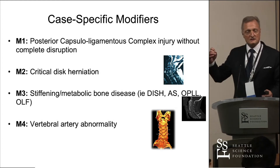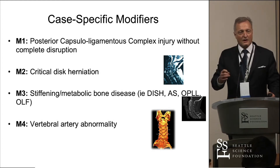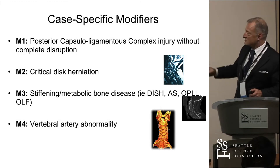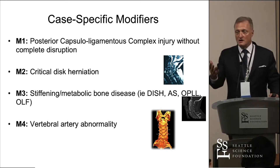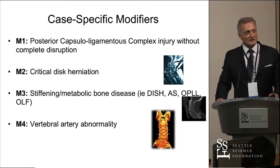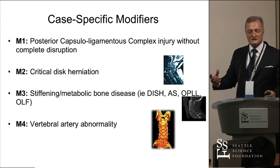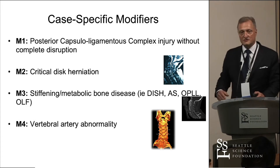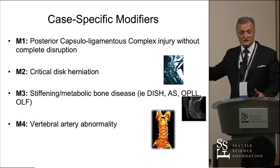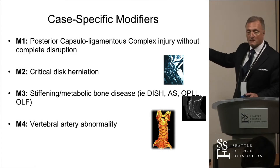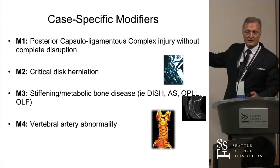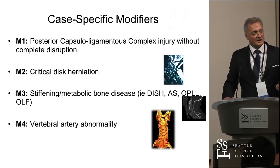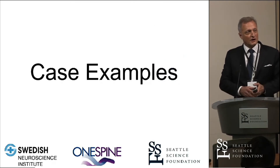M1 is if there's a disruption posteriorly without apparent tear. M2 is a critical disc herniation — a huge disc, which is so prevalent in our thoughts as we saw in the case discussions last night. M3 is if there's a stiffened or ankylosed spine. M4 is whenever there's a vertebral artery injury present. It is possible that patients have several M modifiers — a critical disc herniation, ankylosing spine, and a vertebral artery injury in one injury. At least we have a way to target all of those.